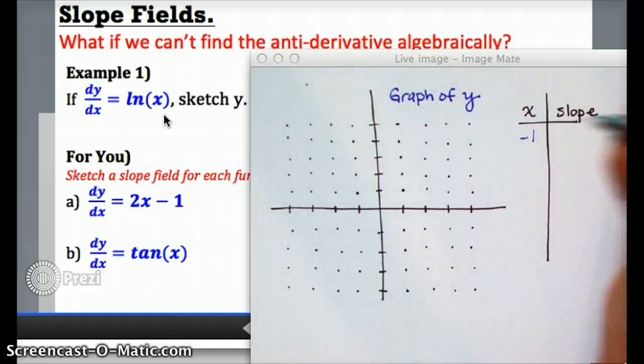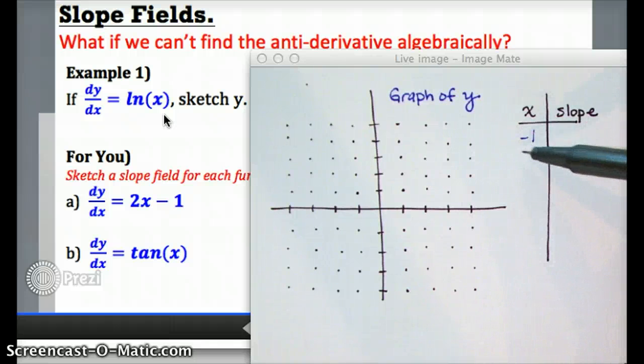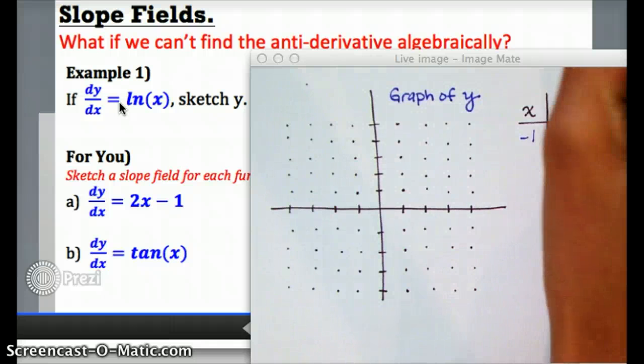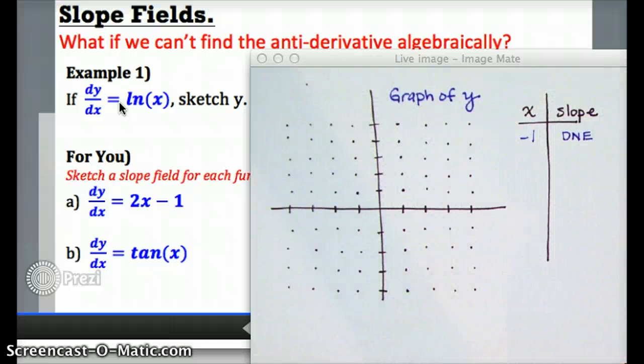For example, if x is negative 1, I can plug negative 1 into the function over here to figure out what the slope should be. Well, it turns out you can't take the natural log of negative 1, so there is no slope. That's kind of a bad example. That's fine. It just means there's no slope at negative 1.